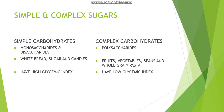Simple carbohydrates are obtained from white bread, sugar, and candies, etc. Complex carbohydrates are obtained from fruits, vegetables, beans, whole grains, etc. Simple carbohydrates have a high glycemic index, meaning blood sugar rises quickly. Complex carbohydrates have a lower glycemic index, which is better for managing type 2 diabetes and reducing the risk of heart diseases.